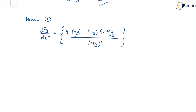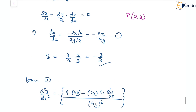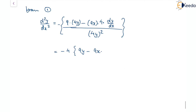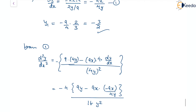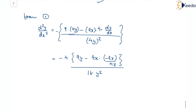We can rearrange this, noting a factor of 4 in numerator and denominator. Taking constants outside, the numerator becomes minus 4 times (9y minus 9x·(dy/dx)), and substituting dy/dx = minus 9x/4y into the expression, with denominator 16y².